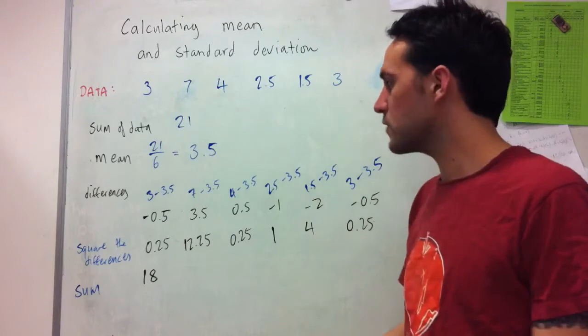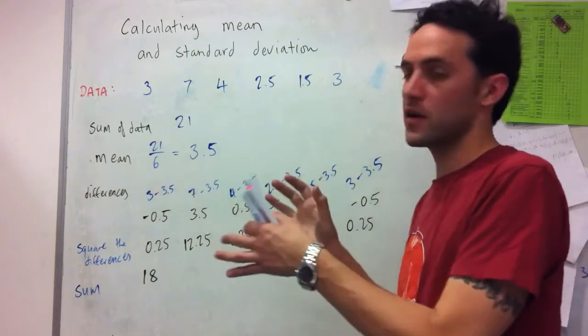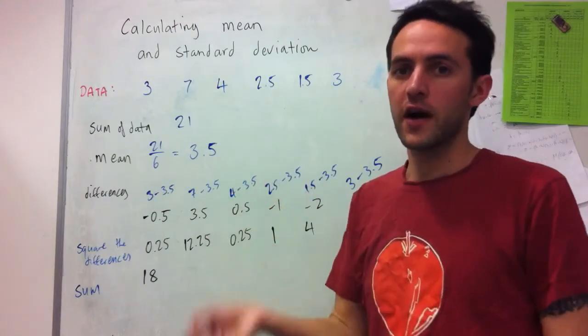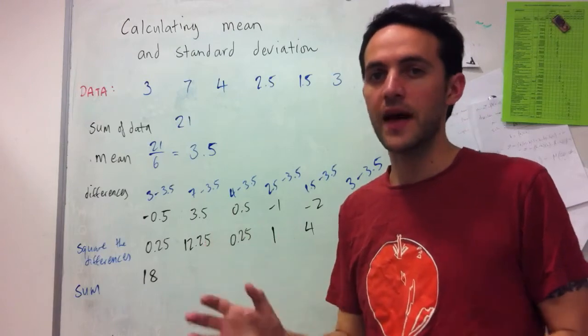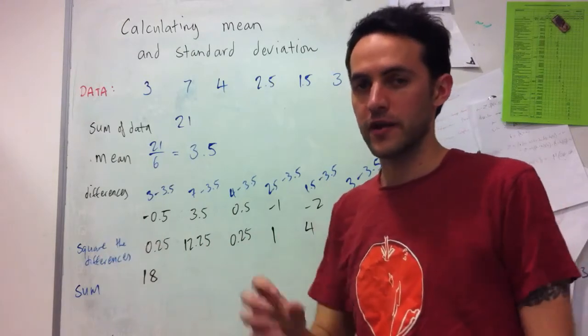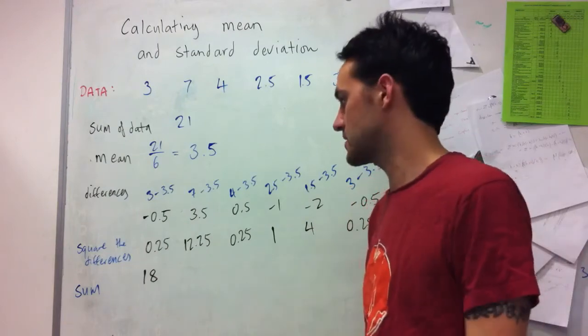This is done for a few reasons. One of the things that it enables us to do is because we've got a small sample, dividing by 5 instead of dividing by 6 will make our number slightly larger. So it sort of adds a little bit on or increases the size of how much the deviation is measured by.